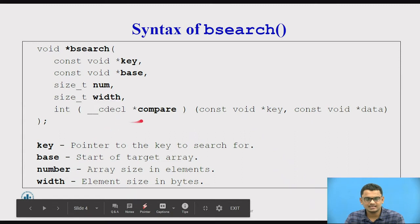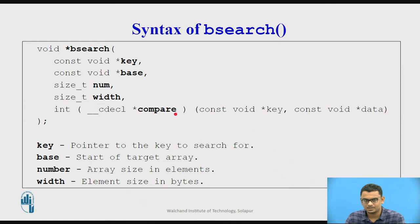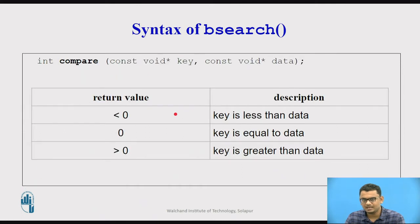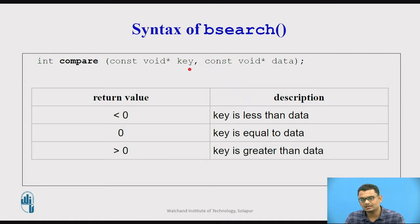Now let us discuss the fifth parameter — the compare parameter. The fifth parameter is a pointer to a subroutine where two values are compared. The two values are: the first one is the key value and the second one is the data element in the array.